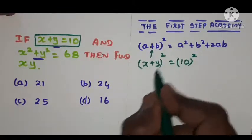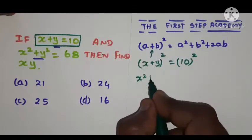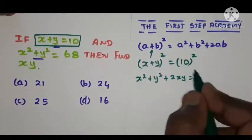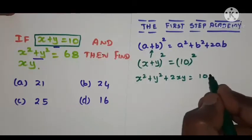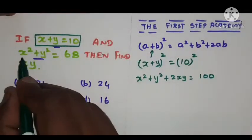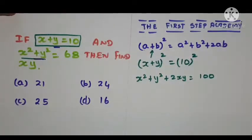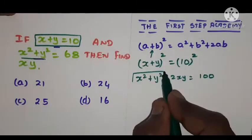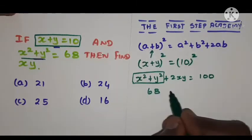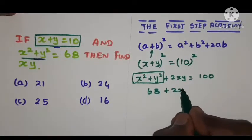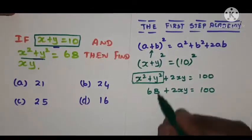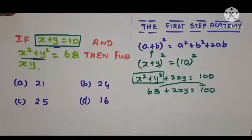The expansion of (x + y)² is x² + y² + 2xy, which equals 10² = 100. Now, from the second given value, x² + y² = 68, so we substitute 68 in place of x² + y²: 68 + 2xy = 100.